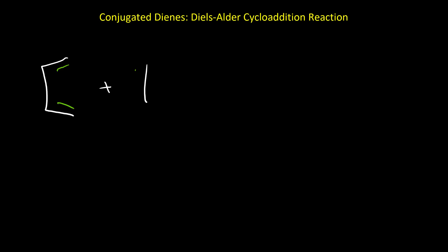In this video we are going to talk about Diels-Alder cycloaddition reaction for conjugated dienes. Diels-Alder reaction is a 4 plus 2 cycloaddition reaction. We name it 4 plus 2 because we have 4 pi electrons from the diene and 2 pi electrons from the alkene. So it is the reaction between a conjugated diene and an alkene (dienophile).